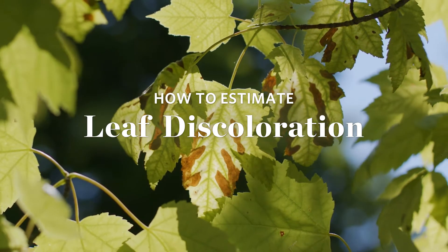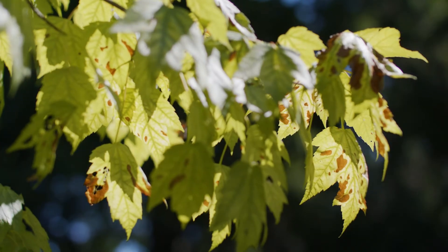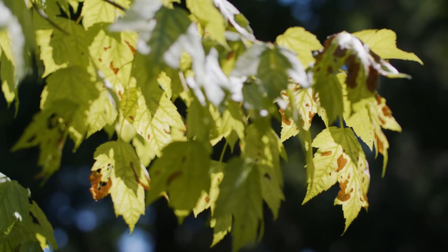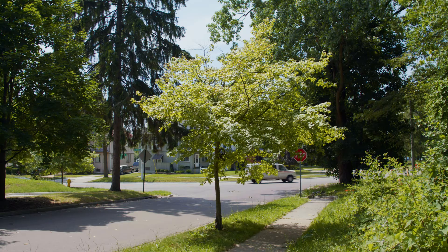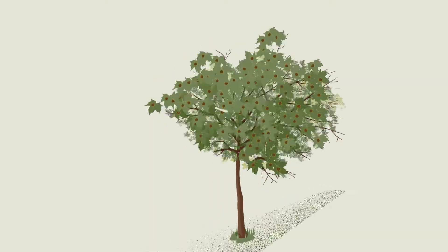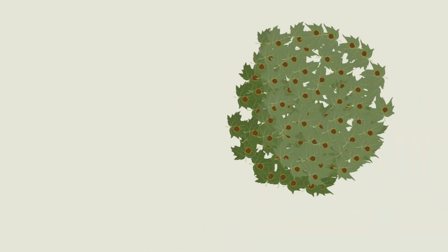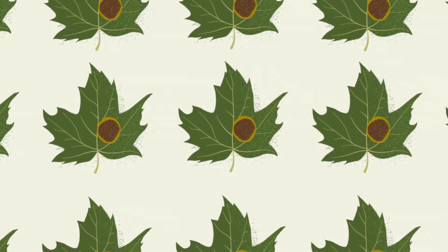To estimate leaf discoloration, you need to estimate the entire percentage of the total leaf surface that is discolored. To do that, imagine you could take every leaf off a tree and stitch it together to form a leaf quilt. The percentage of leaf discoloration would be the total percentage of that quilt that was discolored.